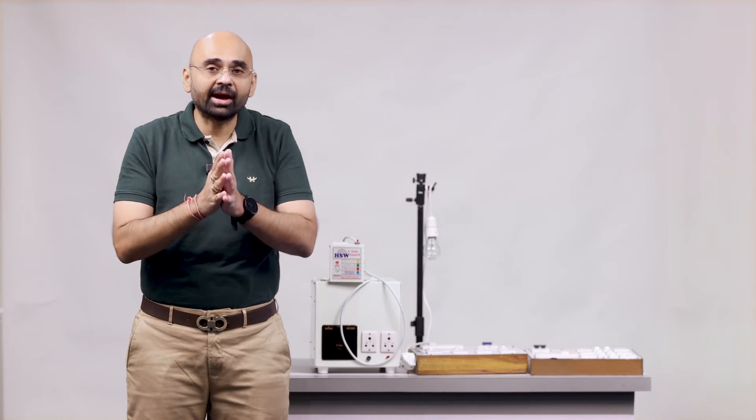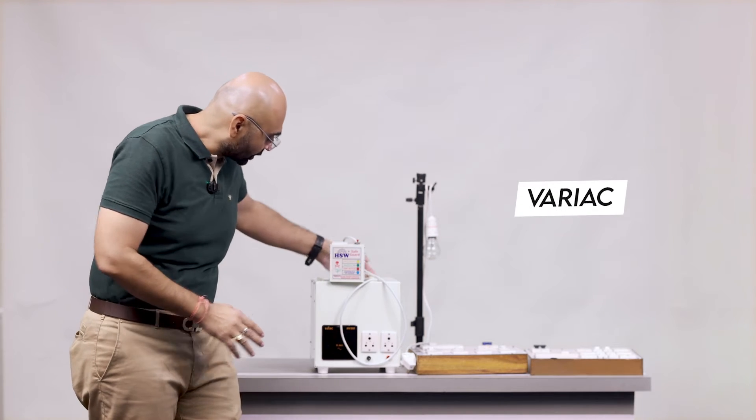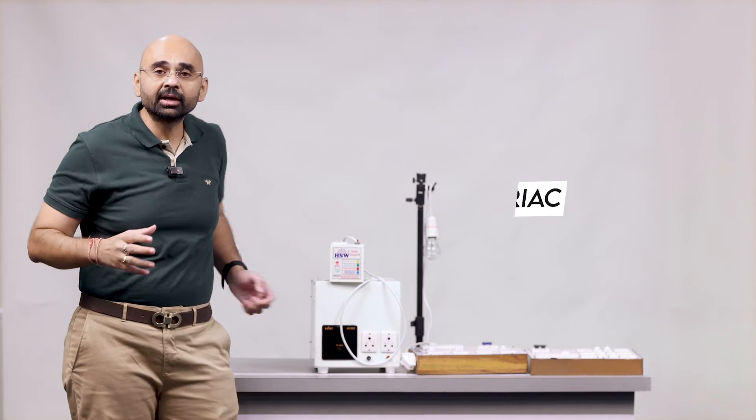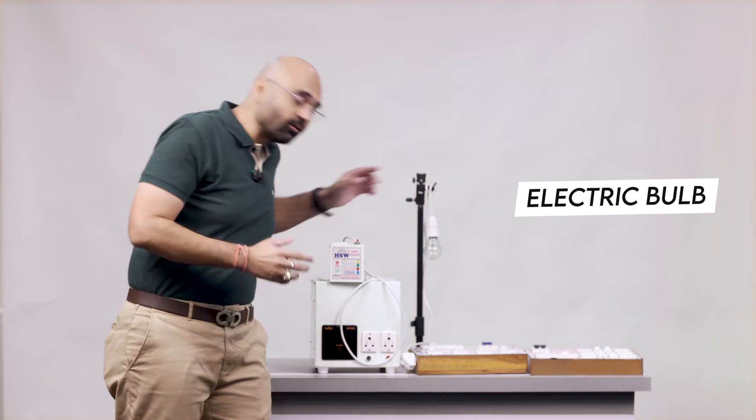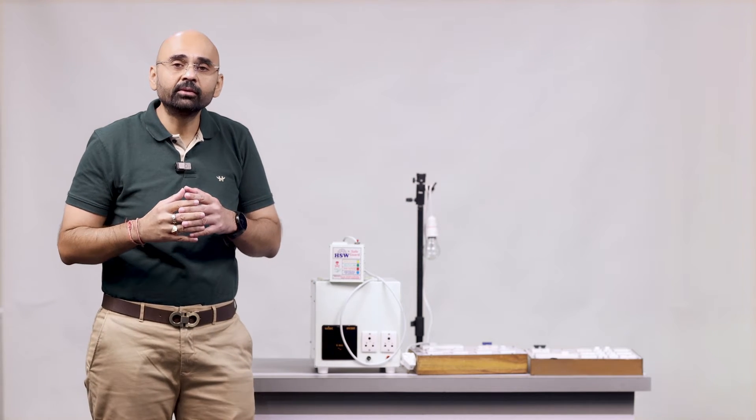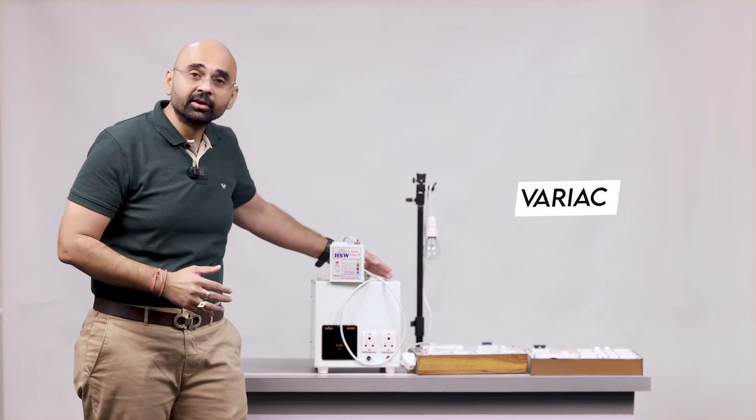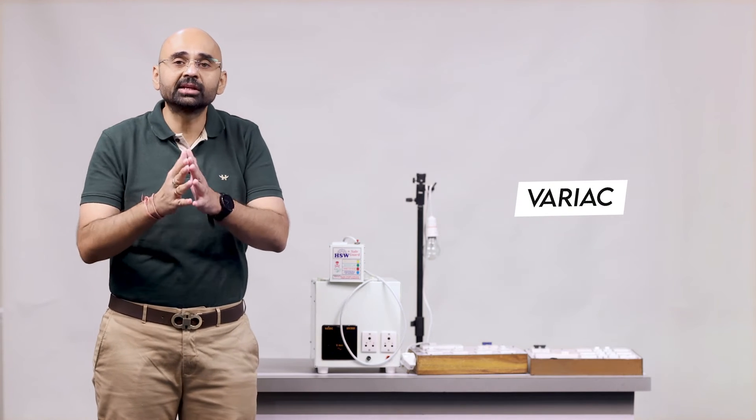And another thing we have is the variac. So this variac will show the input voltage in the bulb and here is the bulb. So now what we do is first we give electric supply to the variac from the switchboard which is perfect.